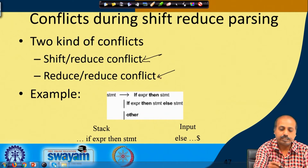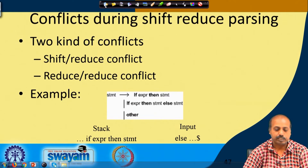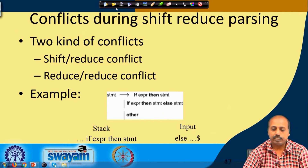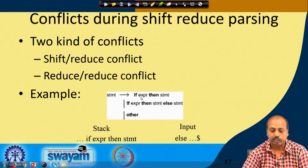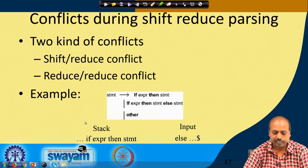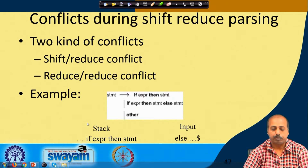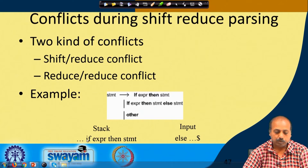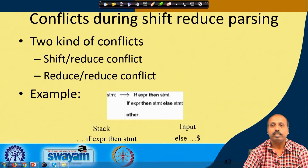Let us take an example to see how shift-reduce conflicts can occur. Consider the if-then-else grammar: a statement produces either 'if expression then statement', or 'if expression then statement else statement', or other statements. At some point the situation may be like this: in the stack we already have the tokens 'if expression then statement'. Here expression and statement are non-terminals, and if and then are terminals — the stack can contain both terminals and non-terminals.